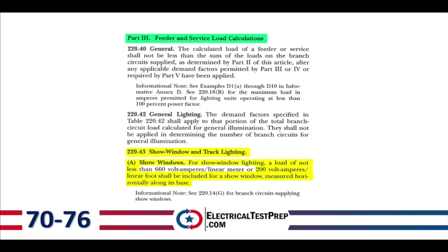Under Part 3, Feeder and Service Load Calculations, section 220.43, Show Window and Track Lighting. For show window lighting, a load of not less than 200 volt-amps per linear foot shall be included, measured horizontally along its base. We already learned that — it's restated here in the calculations section.